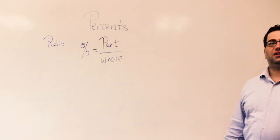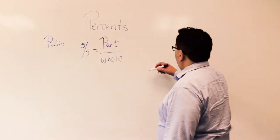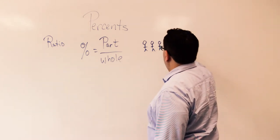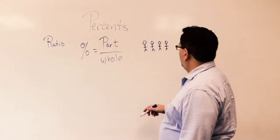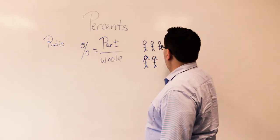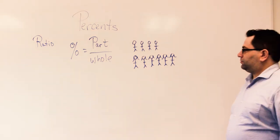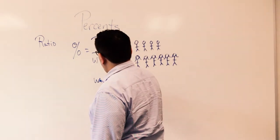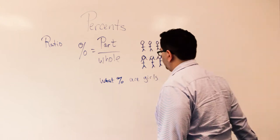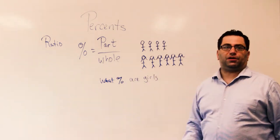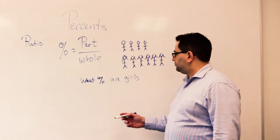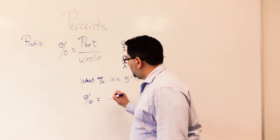It's maybe best to explain this in an example. So in our class, let's say there are four boys and six girls. If I want to find out what percent are girls, I have to use this relationship to find the percentage. The part: what part are girls? So percentage equals the part that are girls.